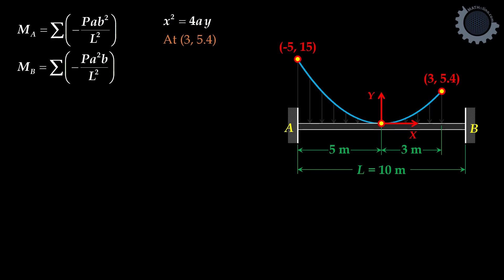Substitute 3, 5.4 to the equation. We have 3 squared is equal to 4A times 5.4. Solve for the latus rectum A, that is equal to 5 over 3. Therefore, the equation of our parabola is X squared is equal to 5 over 3 of Y.